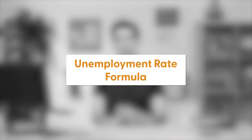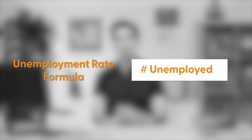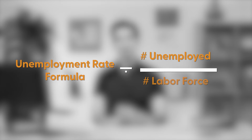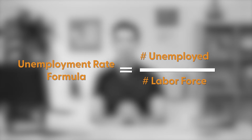To calculate this, we start with the total number of people who meet the Bureau of Labor Statistics definition of unemployment — that is, the number of people who are out of a job and actively looking for work. Then, we divide that by the number of people in the labor force, which is just the number of people who are either employed or unemployed. This way, we are looking at unemployment as a percent of the total number of people who are engaging with the labor market.